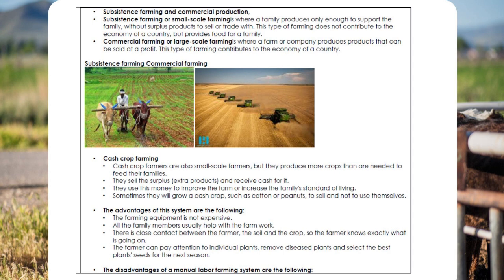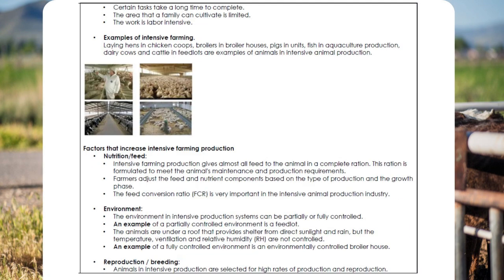Advantages of cash crop/small-scale farming: farming equipment is not expensive; all family members usually help with the farm work; there is close contact between the farmer, the soil, and the crop, so the farmer knows exactly what is going on; the farmer can pay attention to individual plants, remove diseased plants, and select the best plant seeds for the next season. Disadvantages: certain tasks take a long time to complete, the area that a family can cultivate is limited, and the work is labor-intensive.